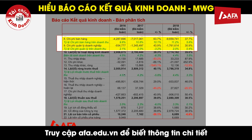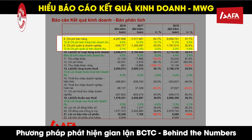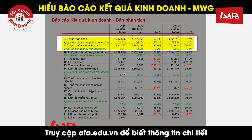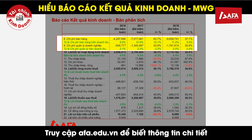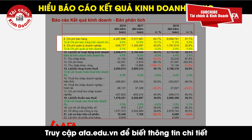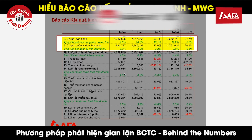Chỉ tiêu tiếp theo trên báo cáo kết quả kinh doanh là chi phí bán hàng và chi phí quản lý doanh nghiệp - những chi phí hoạt động. Chúng ta có thể nhìn thấy mức độ đóng góp của các khoản chi phí bán hàng và chi phí quản lý vào doanh thu, cũng như đánh giá mức độ biến động qua các năm. Điểm quan trọng cần lưu ý là tỷ lệ chi phí bán hàng trên doanh thu phản ánh mức độ hoạt động của công ty. Ví dụ, nếu doanh thu tăng mạnh nhưng chi phí hoa hồng cho nhân viên bán hàng không tăng, thì chúng ta có thể nghi ngờ về chất lượng của khoản doanh thu tăng đó.